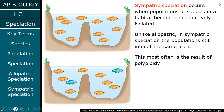Sympatric speciation occurs when organisms within a population become reproductively isolated — as opposed to the geographic isolation in allopatric speciation. In sympatric speciation, they still live in the same area — that's why it's 'sym,' referring to same or similar. So they can still interact; there's no barrier stopping them. They still inhabit the same area, but they have become reproductively isolated.